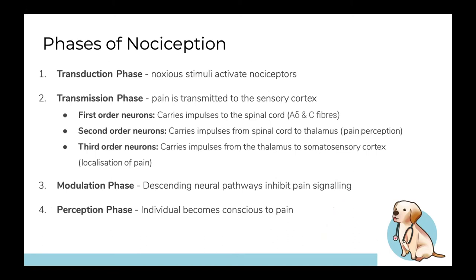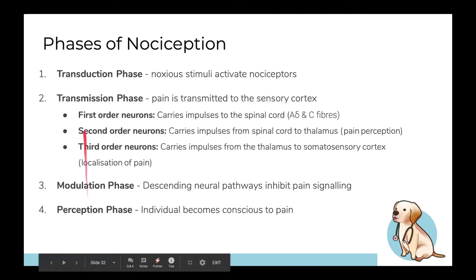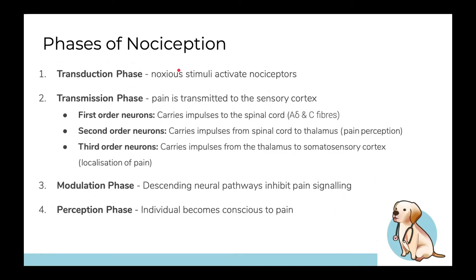There are four main phases of nociception. First, transduction — a sensory stimulus activates nociceptors. Second, transmission — signals travel through three types of neurons: from the site (e.g., hand) to the spinal cord, from the spinal cord to the thalamus where pain is perceived, and from the thalamus to the sensory cortex where pain is localized. Third, modulation — signals come down to inhibit ascending pain. Fourth, perception — conscious awareness of pain.